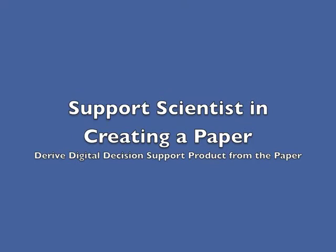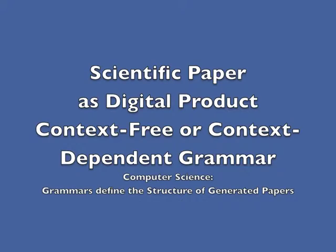Now I asked myself: can we use that for a different purpose? The idea was to support scientists in creating a paper. The paper would be defined by a context-free grammar, and that context-free grammar would be a digital product — a description of the research result — which can then be used for spatial decision support.